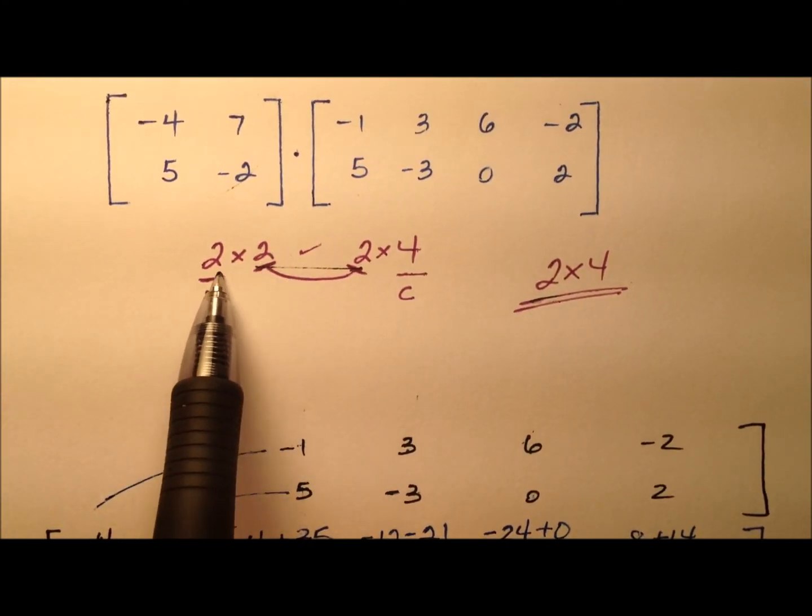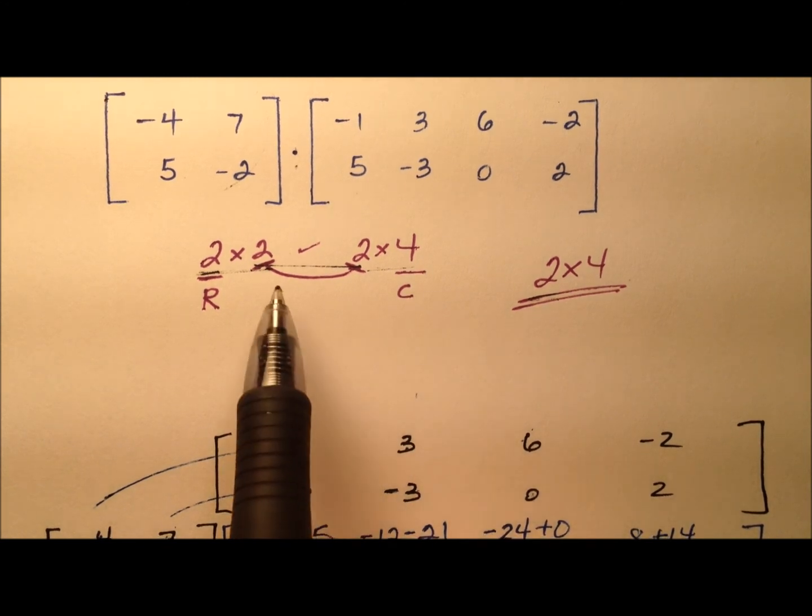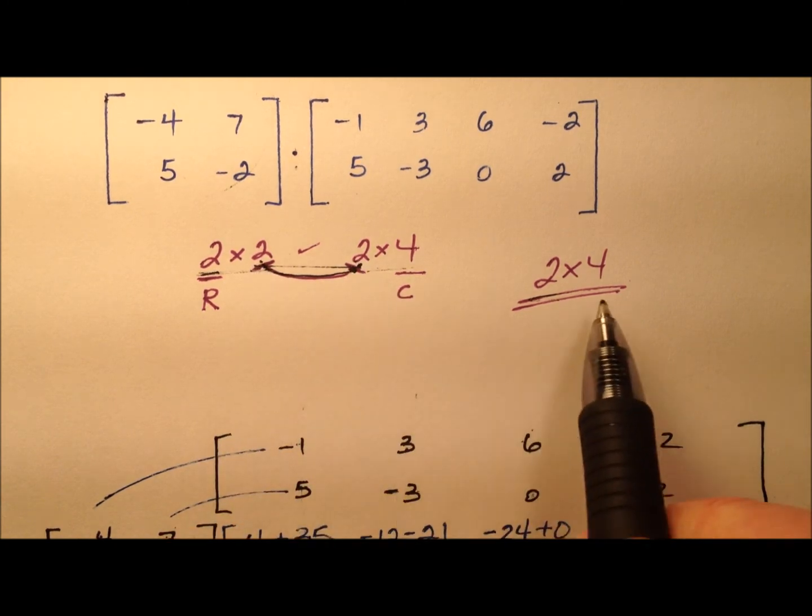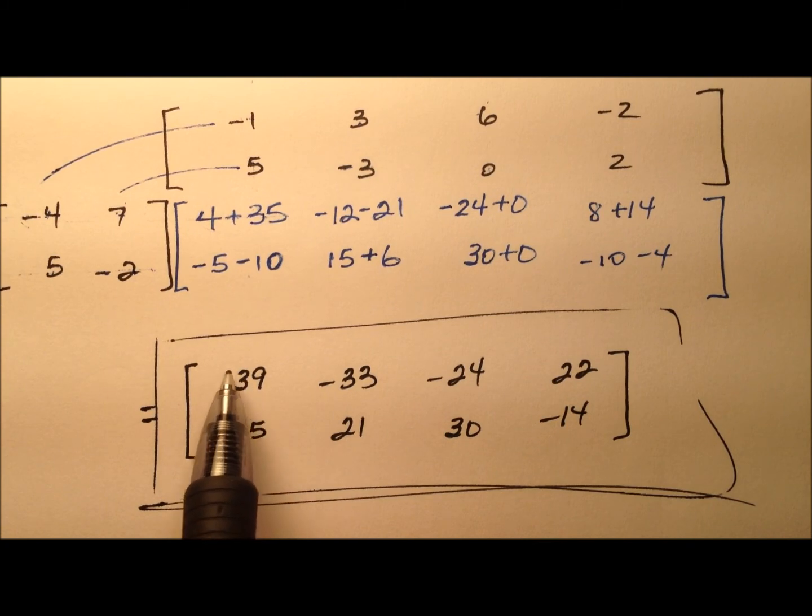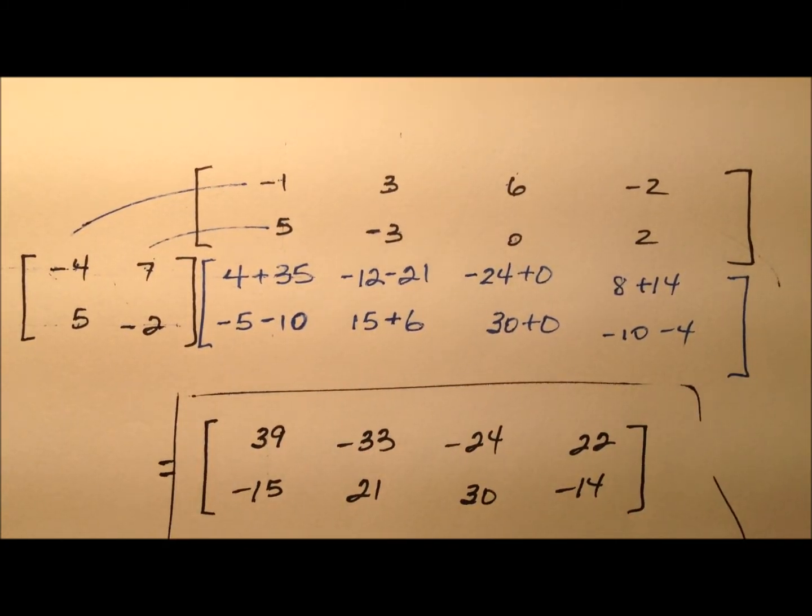When we take this initial 2 by 2 matrix and multiply it by this 2 by 4 matrix, we first saw that the matrix multiplication was indeed defined, because these inner dimensions were equal. We saw the product matrix would be 2 by 4, which in fact it is. And we went ahead and did our multiplication algorithm, and here again is that product matrix.